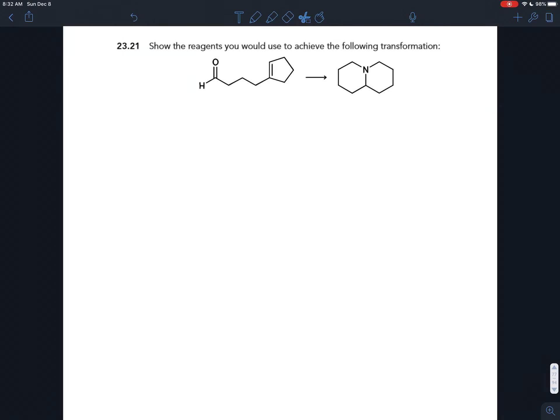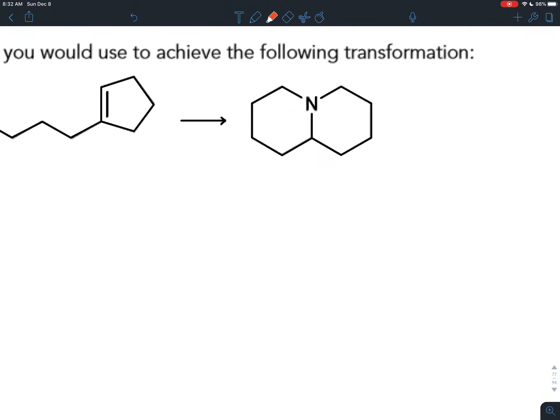In exercise 23.21, we're trying to accomplish a multi-step synthesis of an amine. What you'll notice about this amine is that the nitrogen is bonded to one, two, three carbons. That is a tertiary amine.